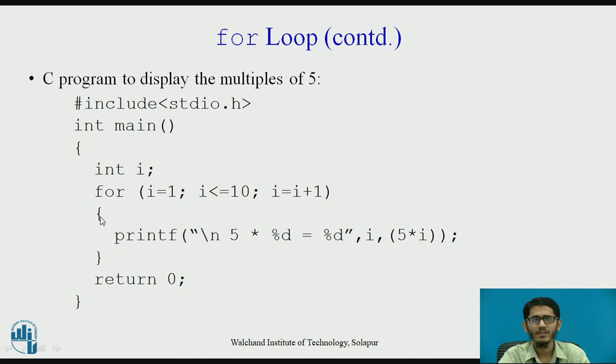Then we have the opening of the loop. It includes only one statement, printf, 5 multiplied by percentage d equal to percentage d. The first percentage d would be replaced by the value of i and second percentage d would be replaced by the value of 5 into i. We want the output as 5 into 1 equal to 5, 5 into 2 equal to 10, 5 into 3 equal to 15 and so on.